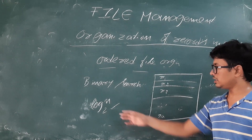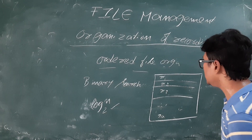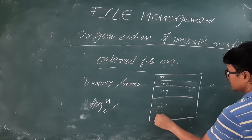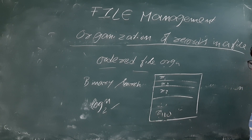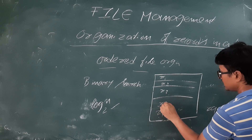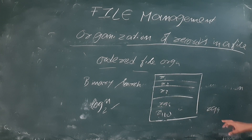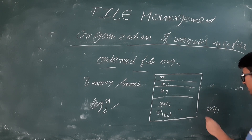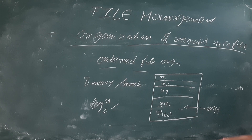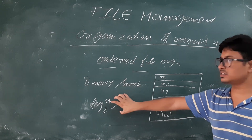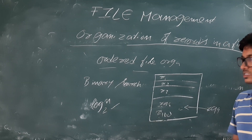The advantage is that by applying binary search we get an average access time of log N base 2. The drawback is that if I want to insert any record — suppose there are 100 records, R1 through R98 and then R100 — and I want to insert R99, I have to shift records to the next position and then insert R99. So insertion is difficult in ordered file organization. The advantage is access time is less; the disadvantage is insertion is difficult.